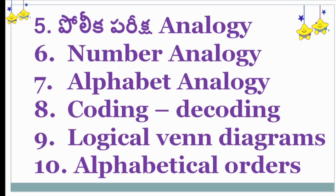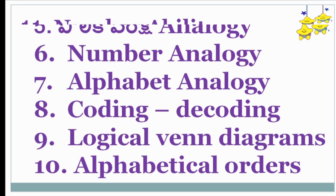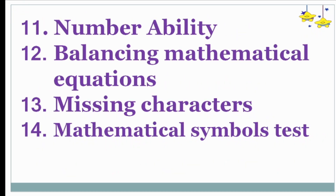The verbal section includes alphabetical order based on ABC dictionary sequence, number ability, and balancing mathematical equations, as well as missing characters in mathematical symbols tests. These are the key points in NMMS verbal reasoning.